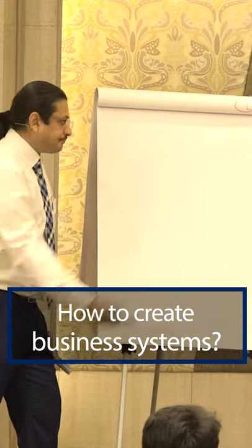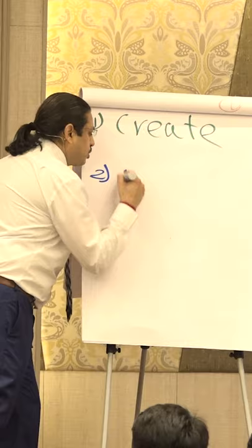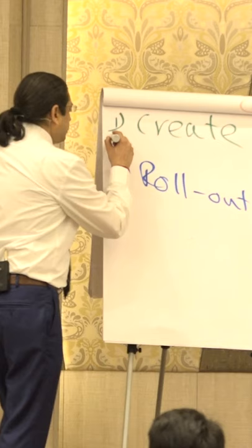This is how you do this — you create a system, and after you create the system, the second step is that you roll it out. You do this and you say that the system is not going to work. Actually, the second step is align.